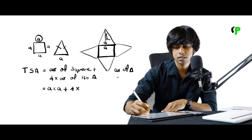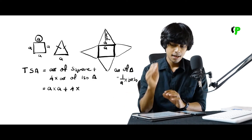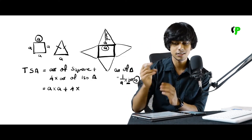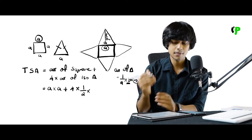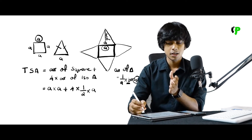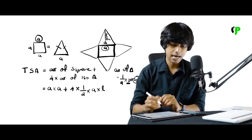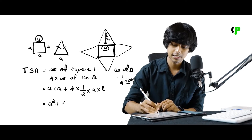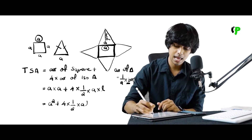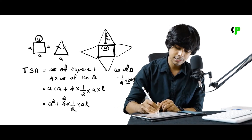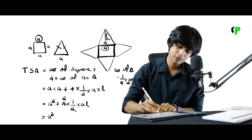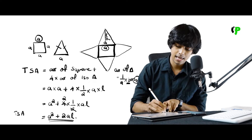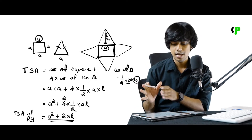Area of triangle is equal to half into base into height. The base is A, and the height is the slant height L. So total surface area equals A squared plus 4 into one-half into A into L. The 4 and 2 cancel, giving us: A squared plus 2AL. That is the formula for the total surface area of a square pyramid.